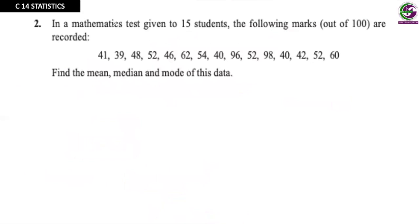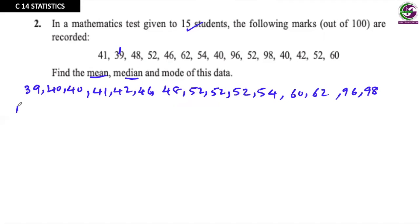Let's see the next question. In a mathematics test given to 15 students, the following marks out of 100 are recorded. Again, we have to find median, so we arrange the data. The least value is 39. Starting from 39, we have 40 repeated twice, 41, 42, 46, 48, 52 repeated three times, then 54, 60, 62, 96 and 98. Counting 1 through 15, it's correct. Now finding mean, we add all the values and divide by 15. When you add all the values, you get 822 divided by 15, which is 54.8 is the average mark.